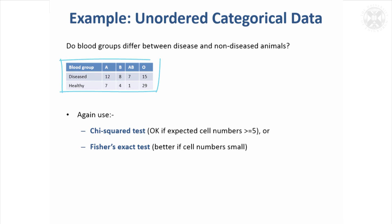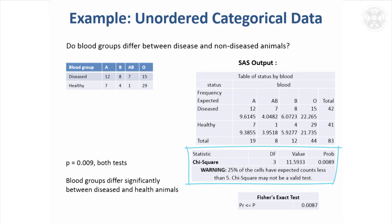For unordered categorical data, you can use the chi-squared test in the same way. For example, blood group data has no particular ordering. We use a chi-squared test on those frequencies to see if the proportion of diseased animals is higher in any particular blood group. Looking at the chi-squared results with expected numbers under the null hypothesis, we get a significant test statistic — but unlike before, we now get a warning: 25% of cells have expected counts less than five, so chi-squared may not be a valid test.